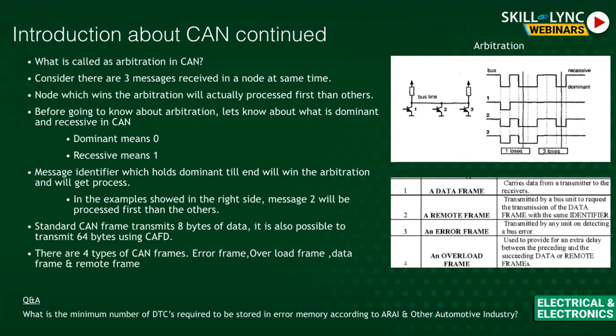This is called arbitration — where you determine which message needs to be processed first. Before understanding this, you need to know two key concepts: zero is the dominant bit and one is the recessive bit, as shown on the left side. Whoever holds the dominant bit last will have the highest priority.